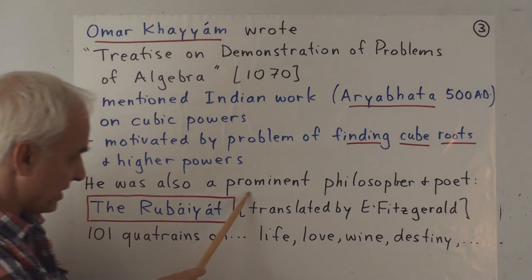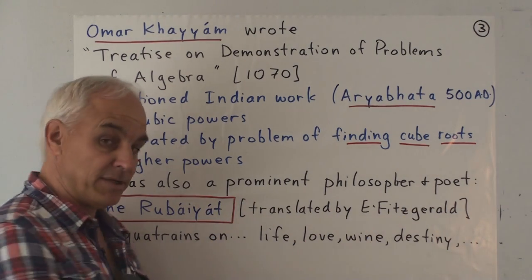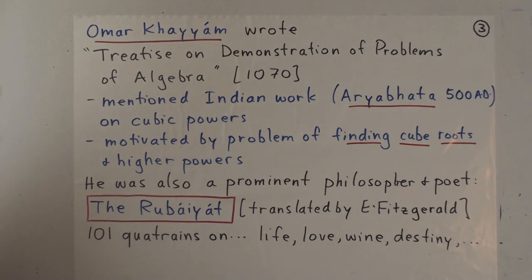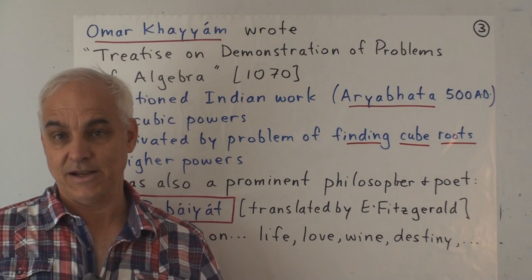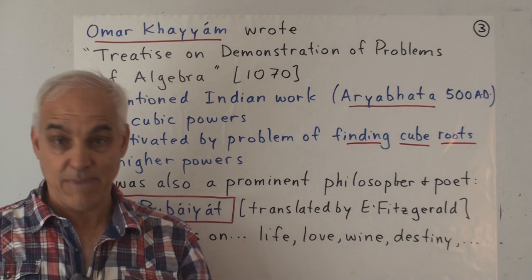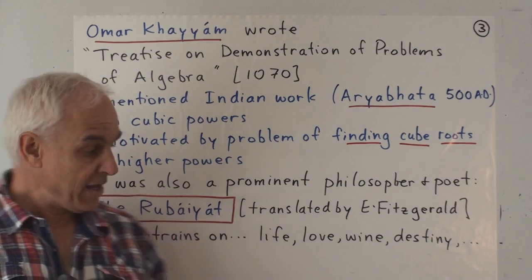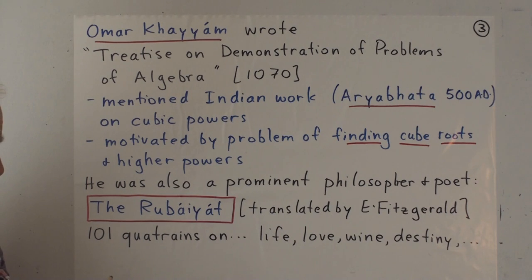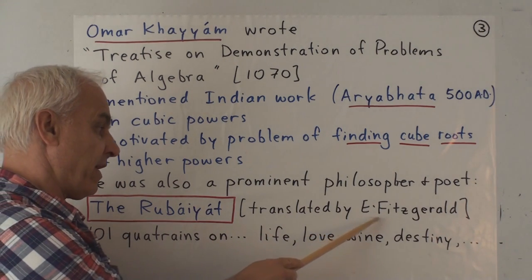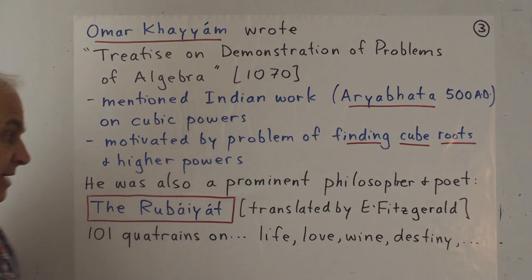He was also, one must say, a prominent philosopher and poet. And he's only one of a handful of mathematicians who excelled in a literary fashion as well as a mathematical one. His most famous work is called the Rubaiyat, which was made famous by, in the Western world at least, by a translation of Edward Fitzgerald in the 19th century.